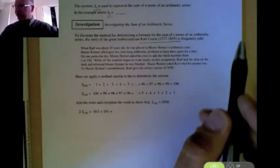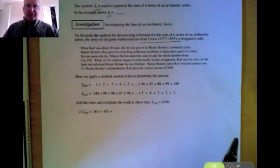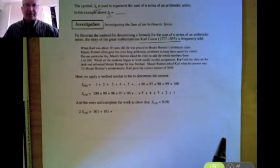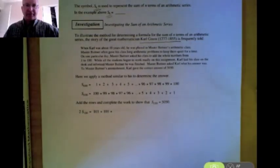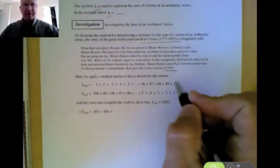So it says when Carl was ten years old, he was placed in Master Butner's arithmetic class and Master Butner often gave them long arithmetic problems to keep them quiet. And on a particular day Master Butner asked the students to add all the numbers from one to a hundred together. And most of the other students started working madly and at that time they used slates. They didn't have paper. They just had little boards where you wrote with chalk. And Carl just put his slate down and said to his teacher, well I'm finished. And his teacher said, well what answer did you get? And Carl in fact got the right answer of five thousand and fifty.